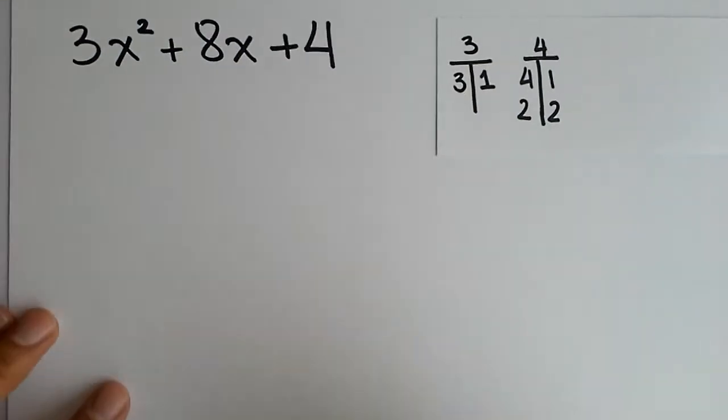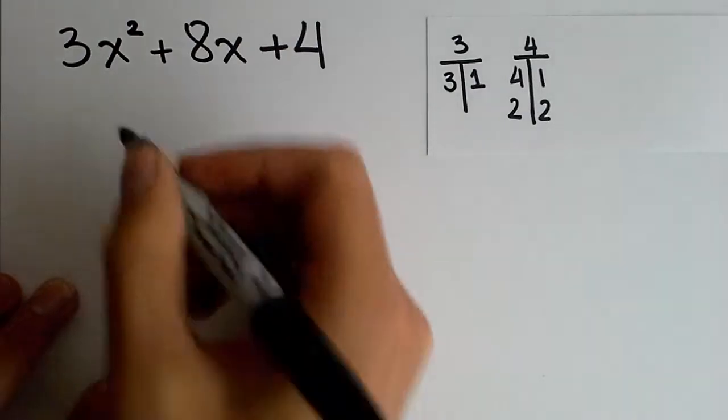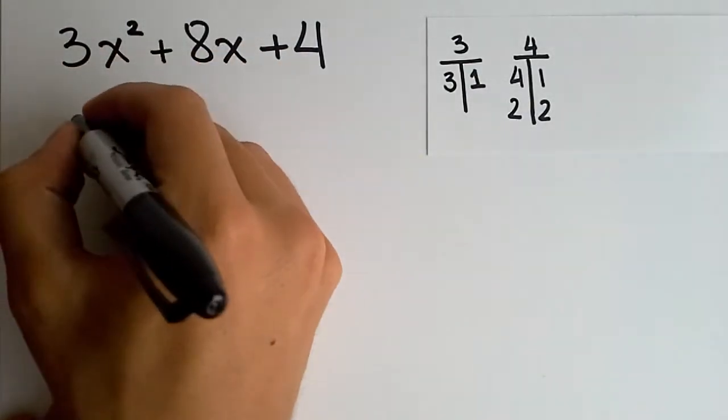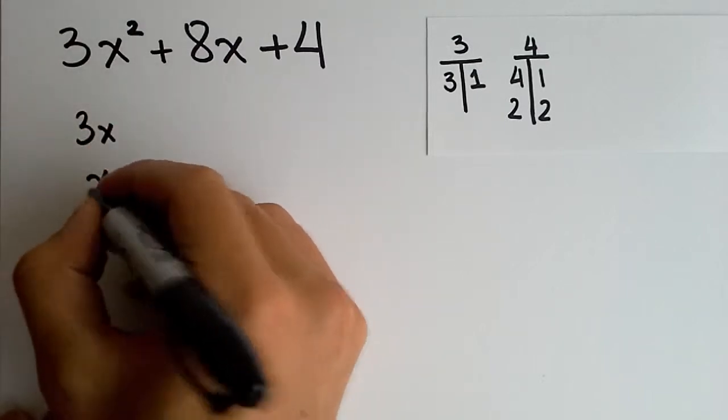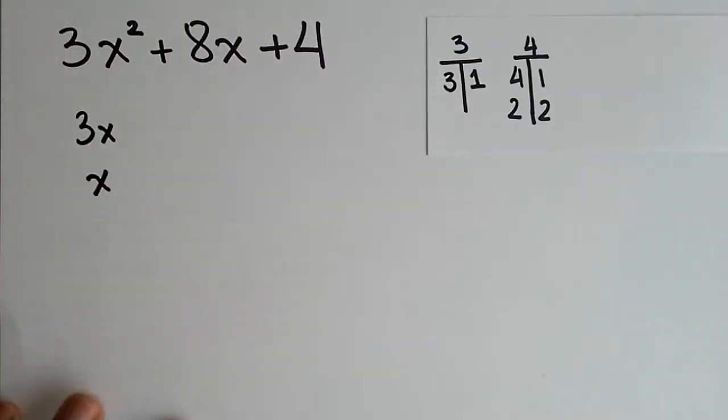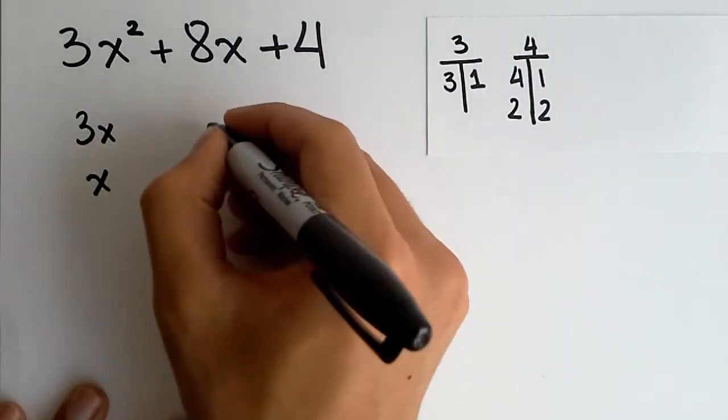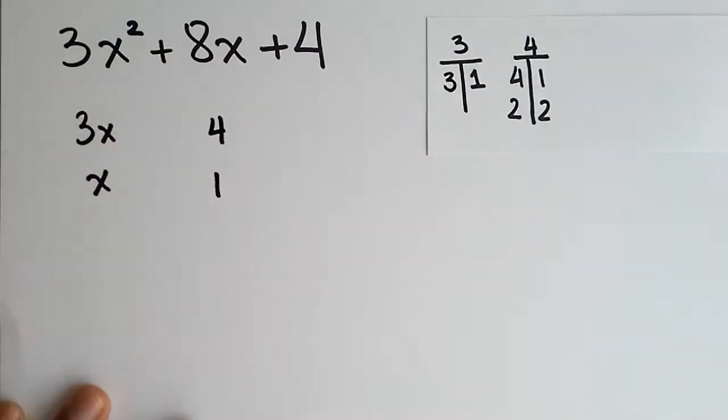So, the 3 and the 1 mean that this 3x squared is going to be split down into 3x and x. And instead of writing it immediately into a parenthesis, what I'm proposing you to do is write it as a column, 3x times x. Now, if you think of the 4, the 4 you can write it as 4 and 1, so do it, 4 times 1.